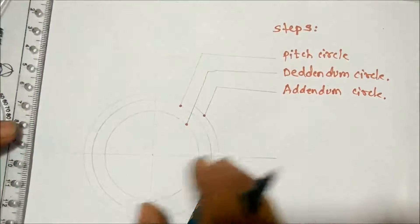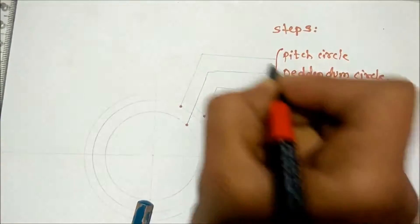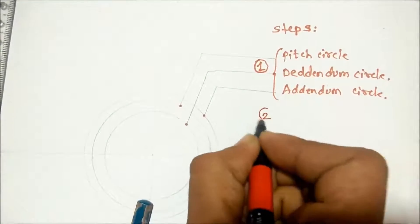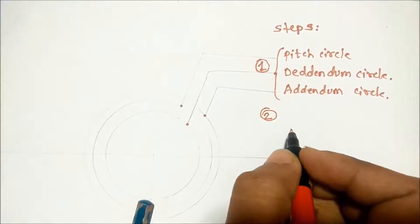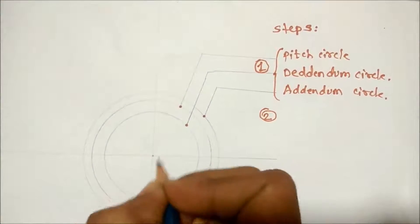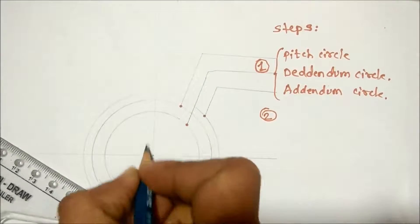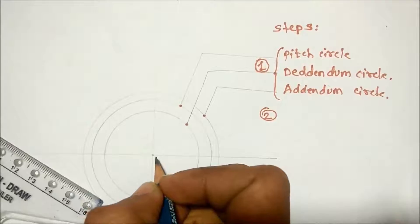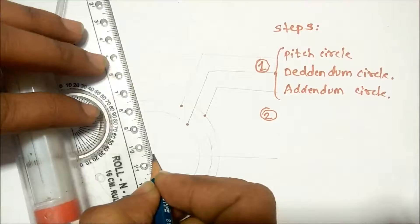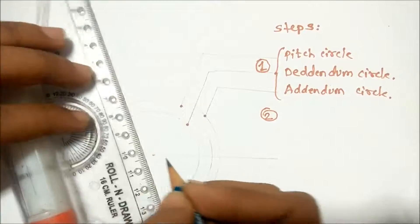The second step is the pressure angle. At the center of the circle, take a 20-degree pressure angle. The 20-degree pressure angle is used for heavy-loaded gears.